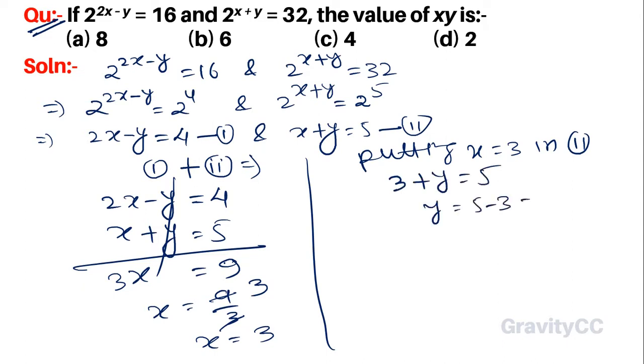So y = 5 - 3 = 2. Therefore xy = 3 × 2 = 6. The answer is option B.